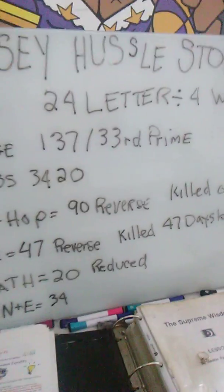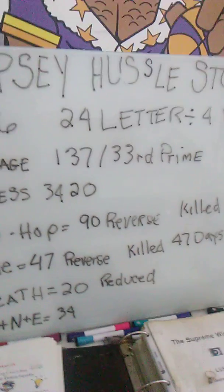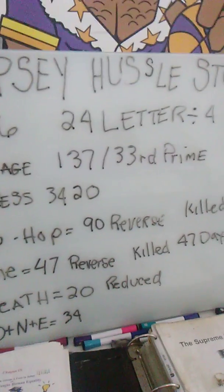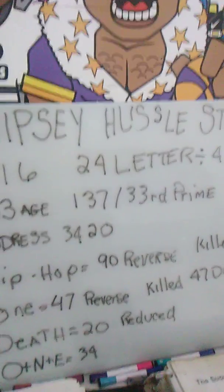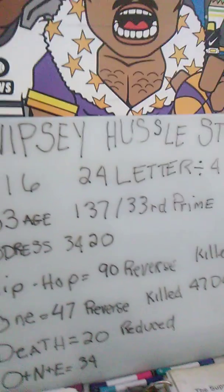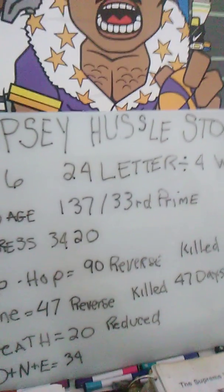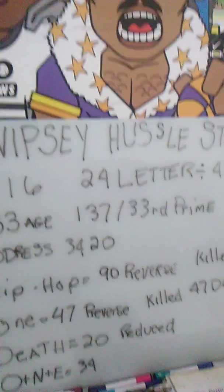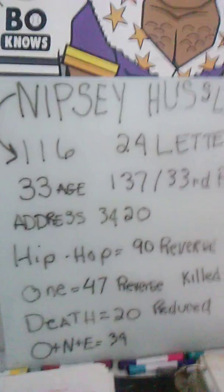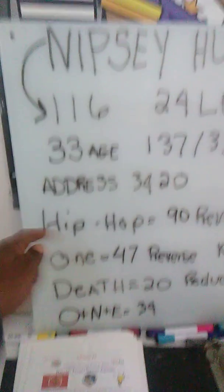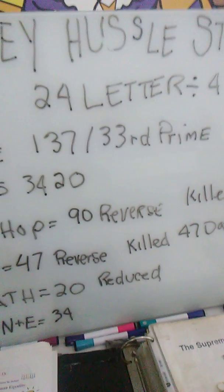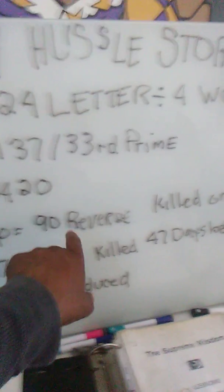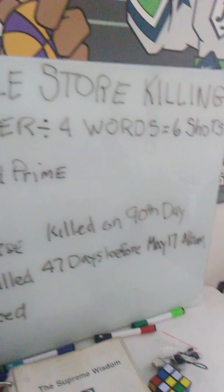Let's get to the information hidden in plain sight. We're talking about simple English gematria and reverse gematria, where A becomes 26 and Z becomes 1 — you take the numbers and reverse them on the alphabet. That's called reverse ordinal. The address was 3420. Looking at the word 'hip-hop' in reverse ordinal, it comes up to the number 90 — and he was killed on the 90th day of the year.